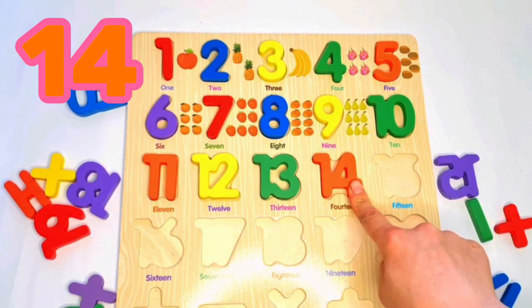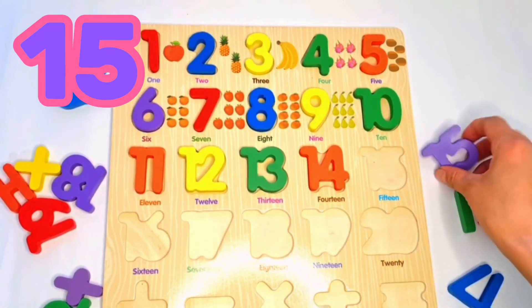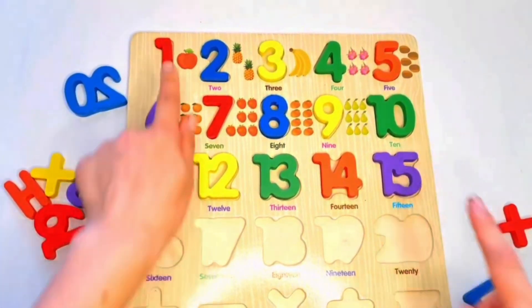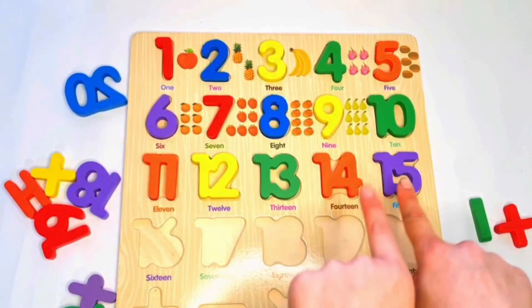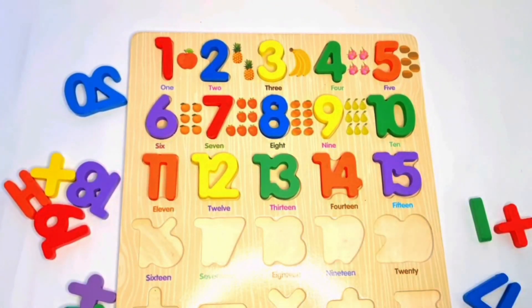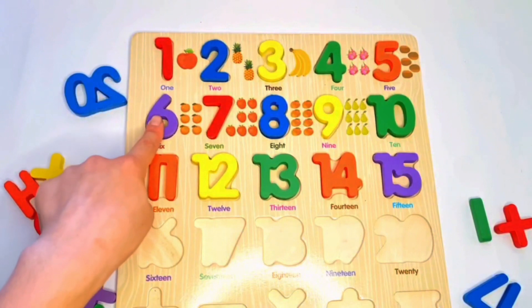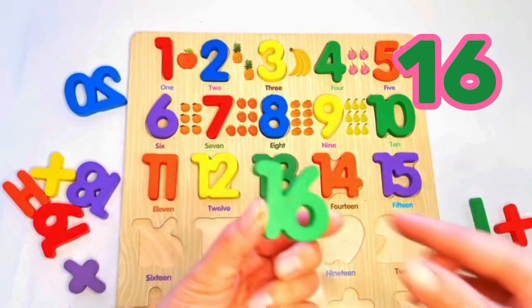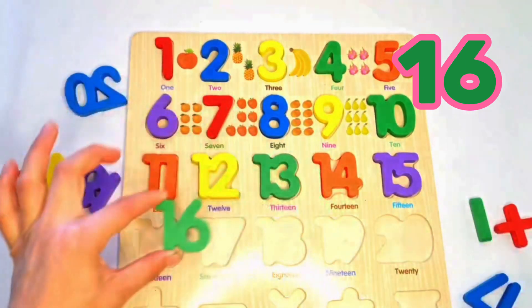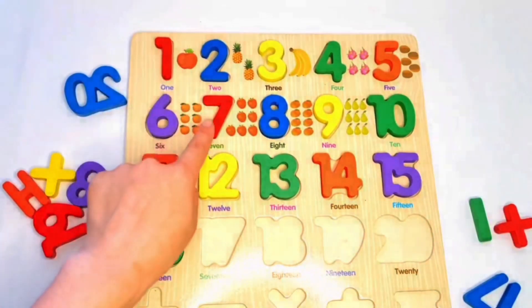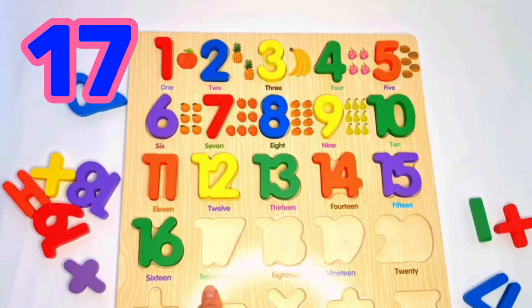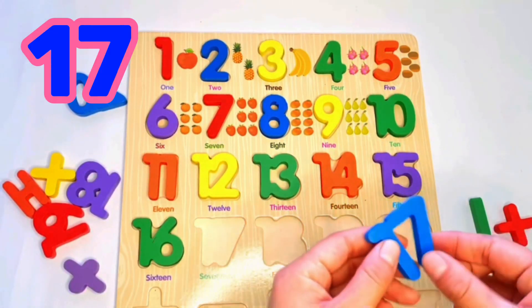After fourteen we have fifteen. Let's put it here. One and five together, fifteen. After fifteen, one and six together, sixteen. Yeah, green sixteen. One and seven together, seventeen. Yeah, blue seventeen.